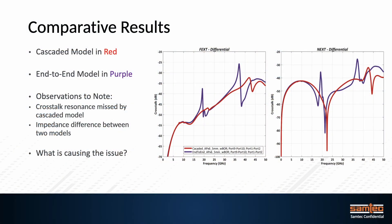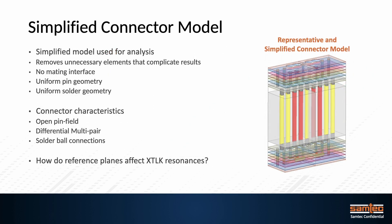Let's compare the results of a cascaded model to end-to-end models in terms of crosstalk. The red curve represents cascaded and the purple curve the end-to-end. As we can observe, there are resonances present in our end-to-end model but not in our cascaded model. To investigate the cause, we're going to simplify our connector model by removing unnecessary elements. We'll have no mating interface, uniform pin geometry — just a rectangular geometric structure — uniform solder geometry. The connector is open pin field, differential multi-pair, with solder ball connections.